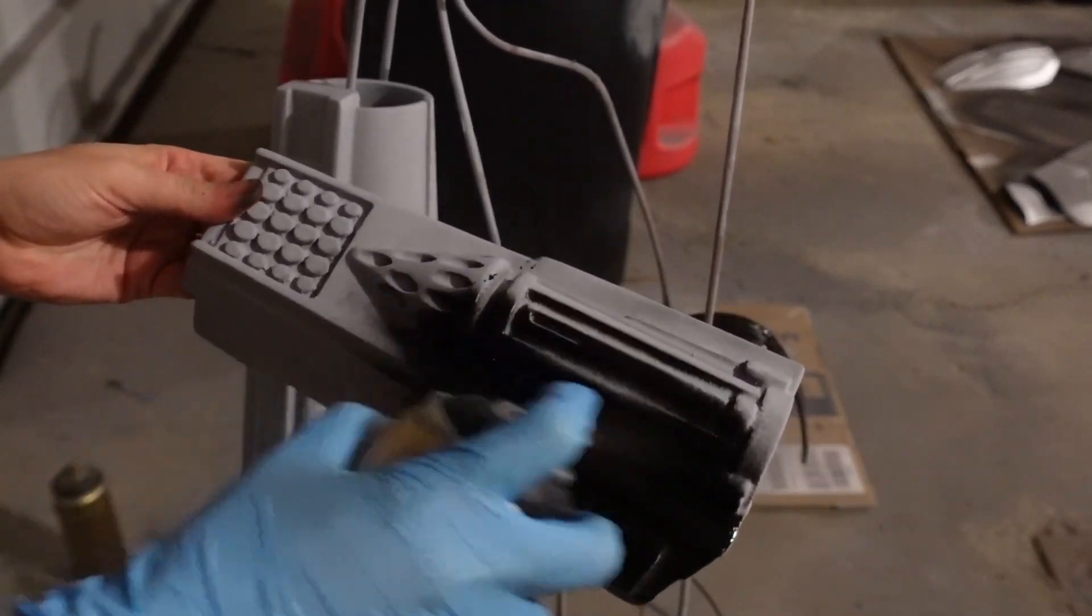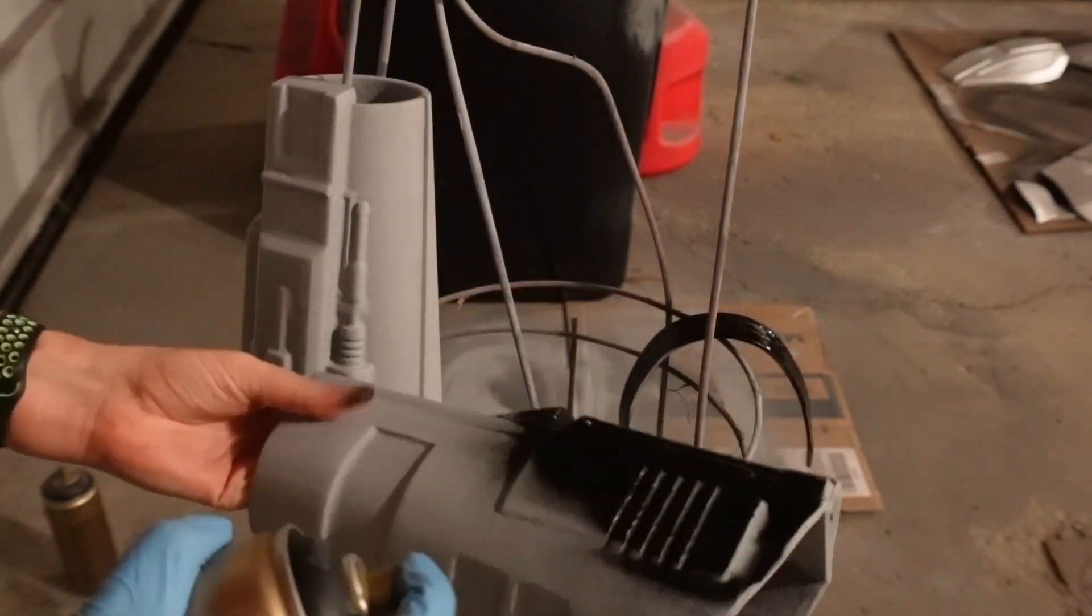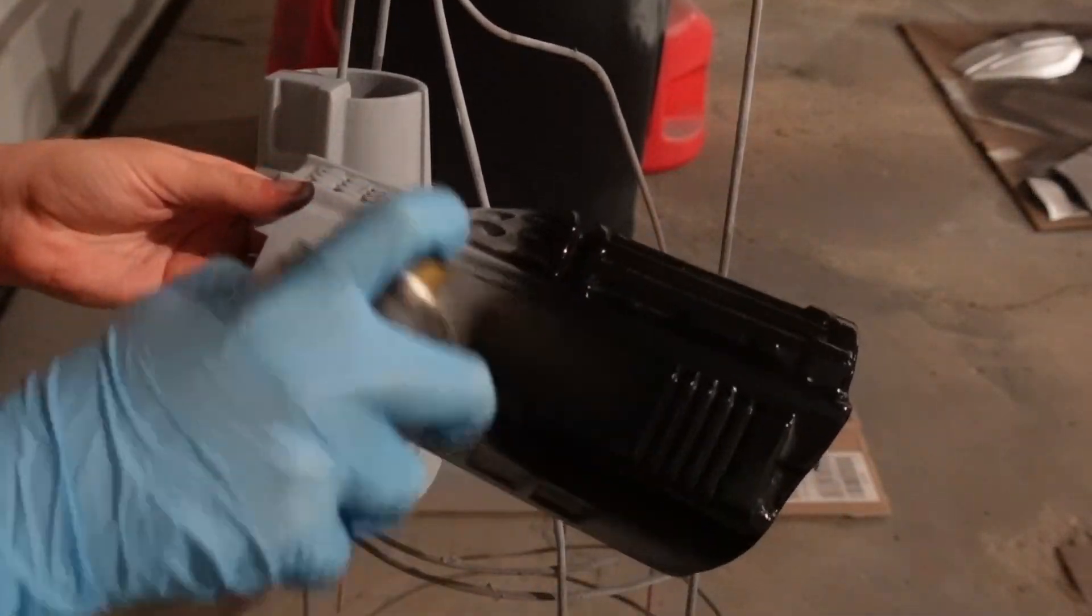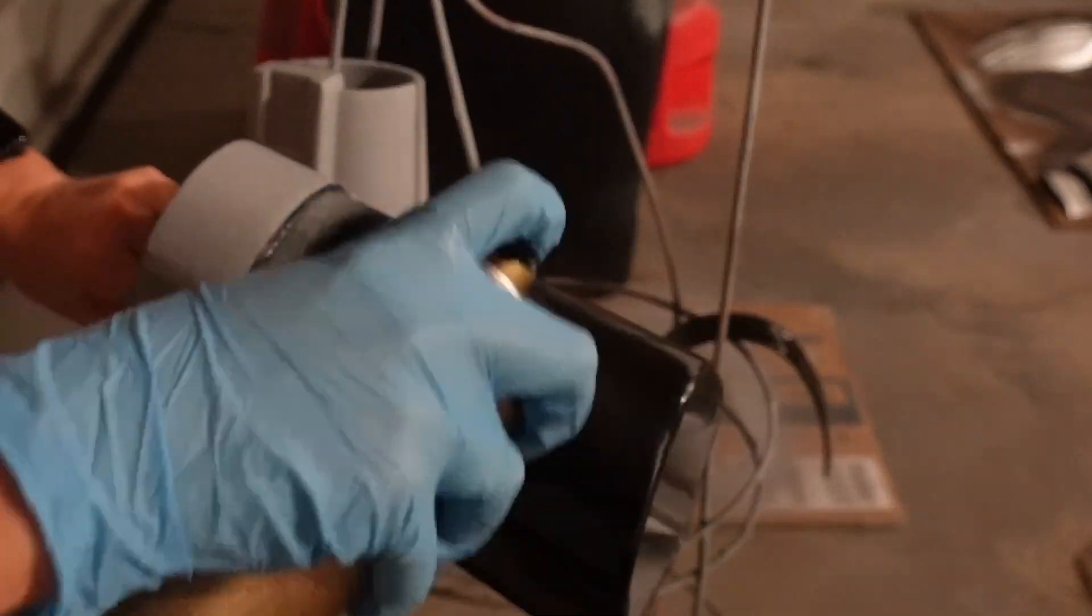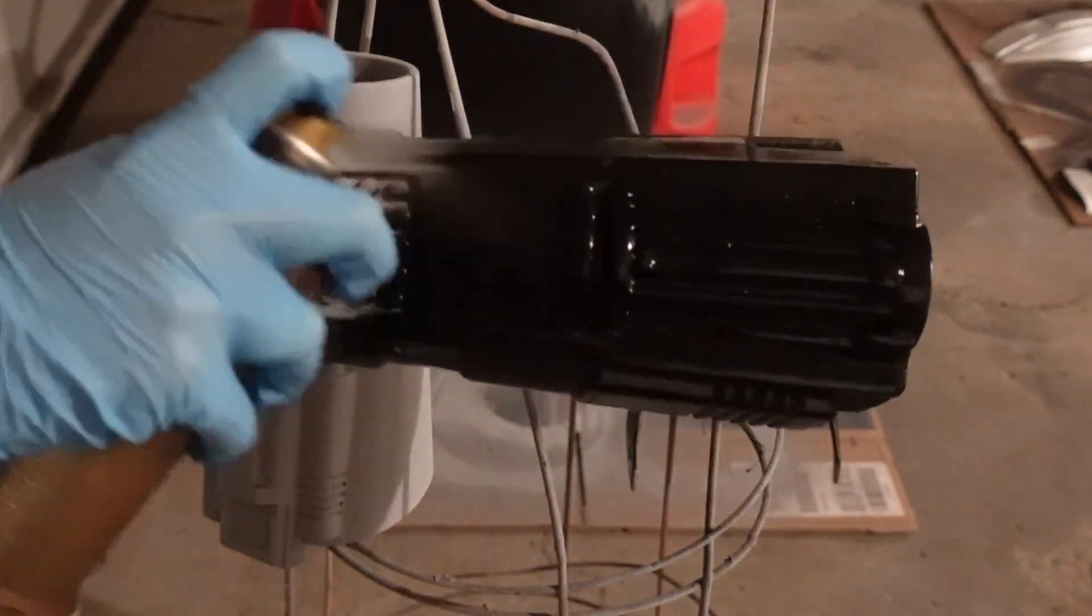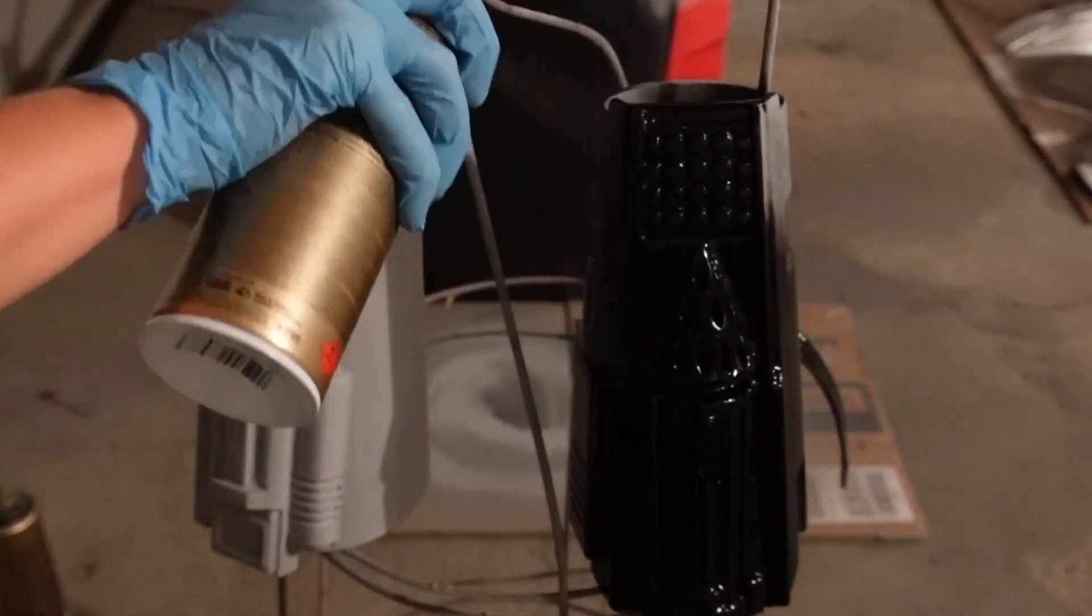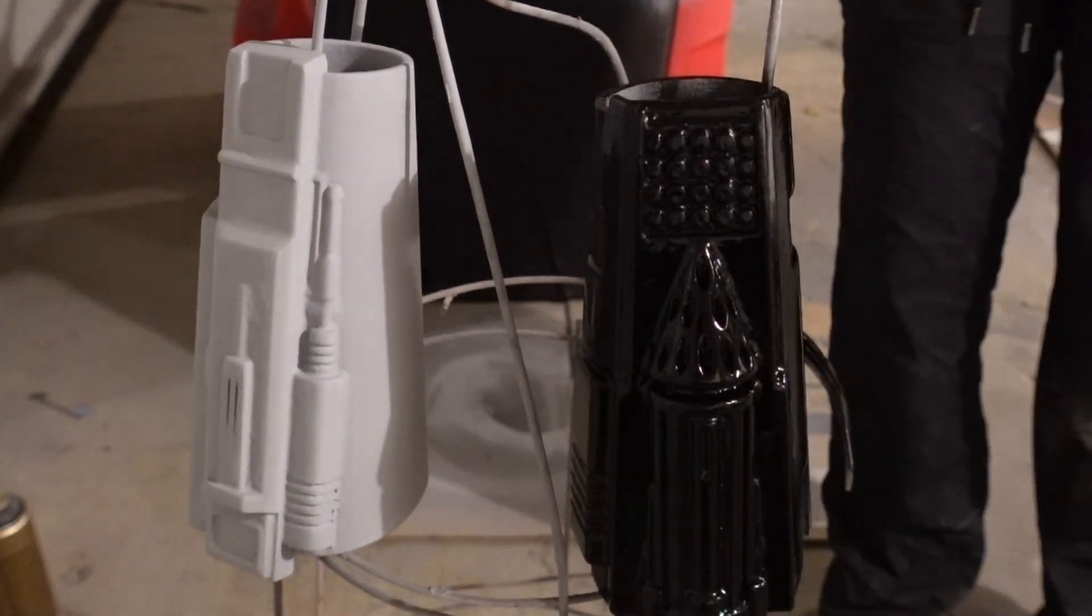For the base layer on these pieces I'm going in with my Montana Gold Shock Black but you can use whatever black you prefer. And again I'm spraying way too close to these armor pieces. Don't be like me, back up a bit and spray six to eight inches away from your stuff to avoid drips in your paint job.